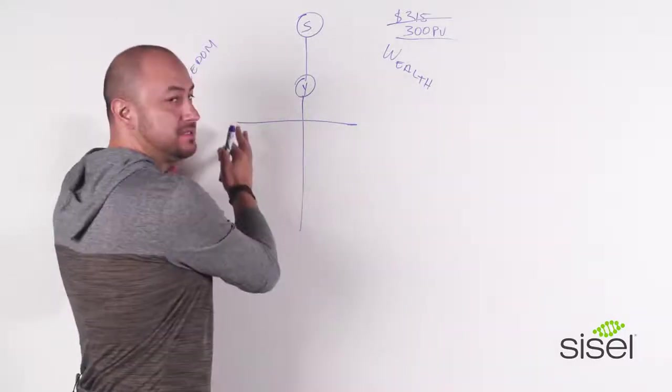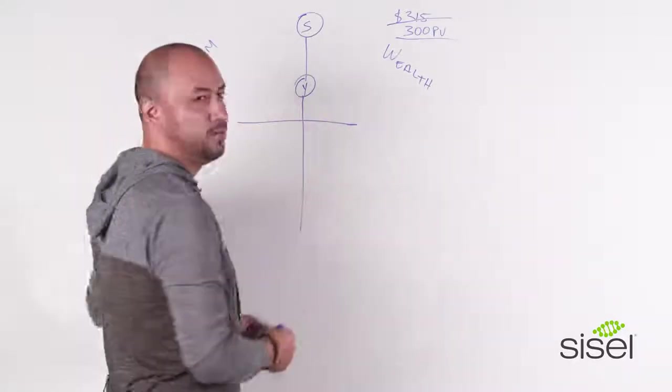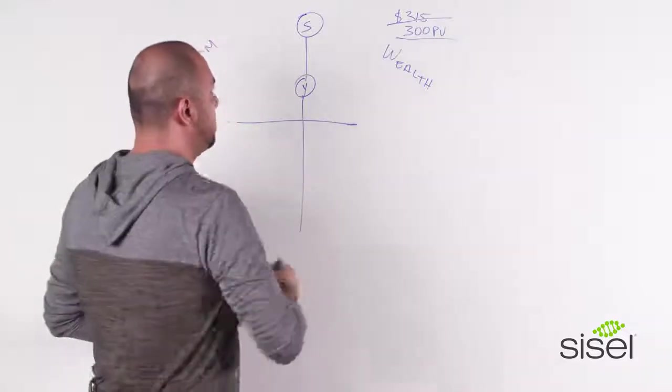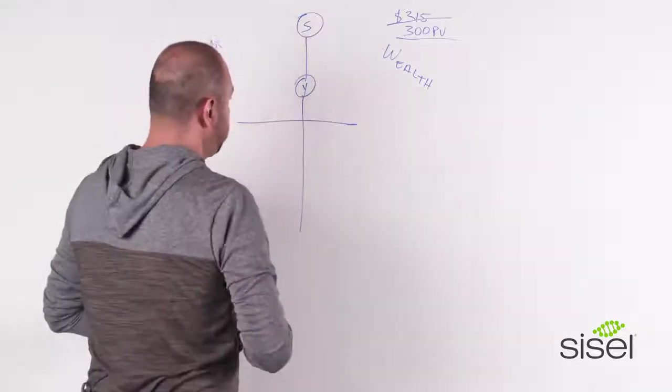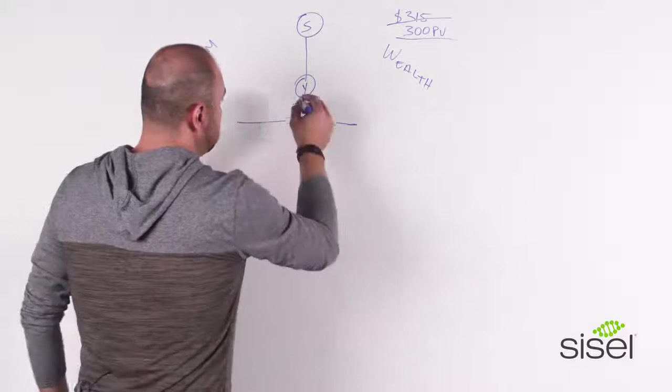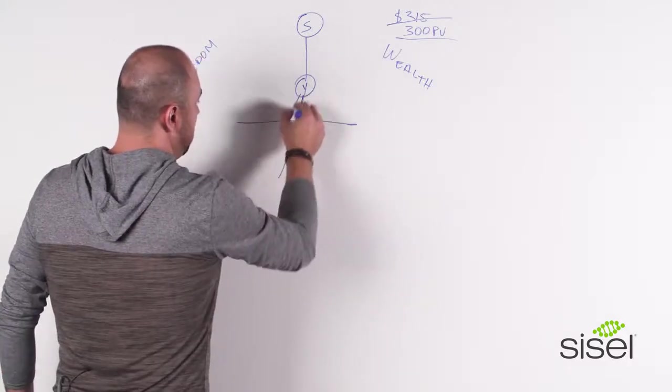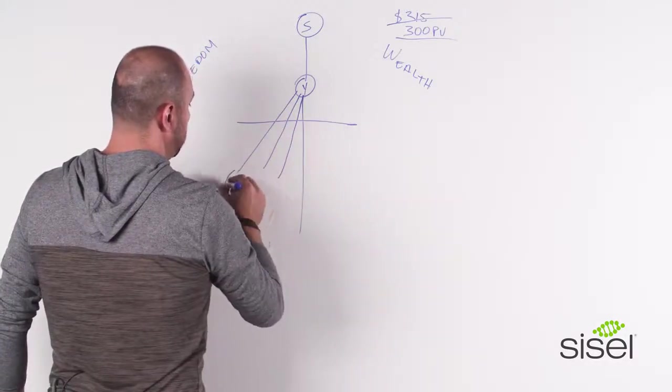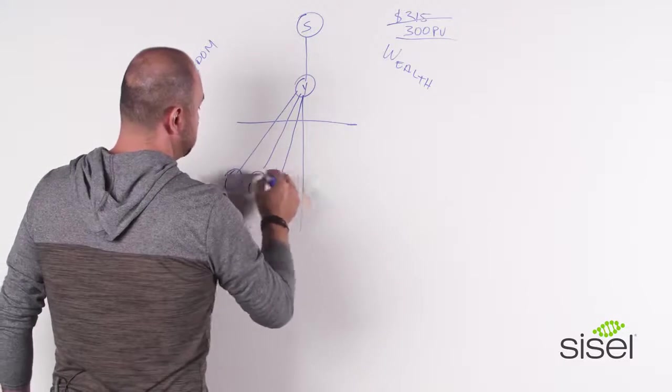Basically, we have our Freedom side and our Wealth side. And we'll explain to you why we call those names. So you have your sponsor here, and there's you. The first thing that you guys need to do when you sign up or you purchase your pack is sign three people.